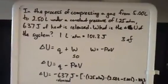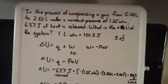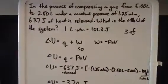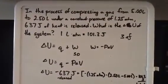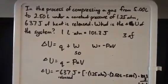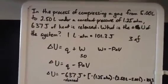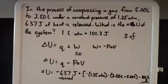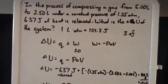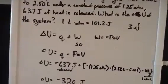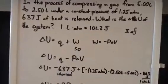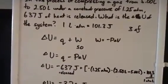Okay, so here we go. This one is number three on the final. In the process of compressing a gas from 5 liters to 2.5 liters under a constant pressure of 1.25 atmospheres, 637 joules of heat is released. What is the change in enthalpy of the system? We're given one conversion factor: 1 liter atmosphere equals 101.3 joules.